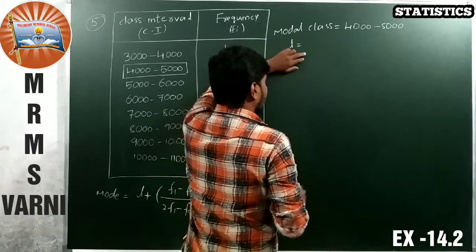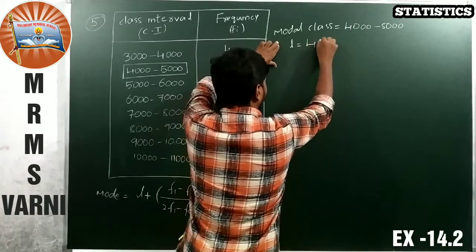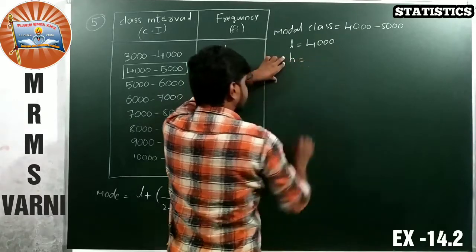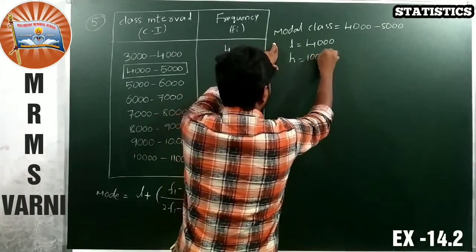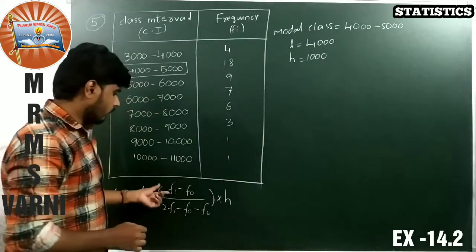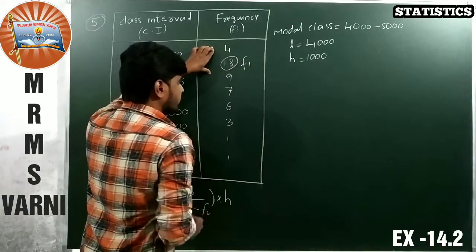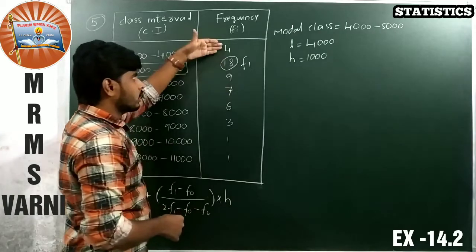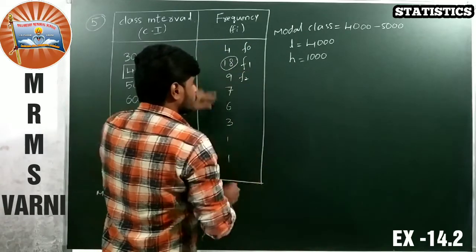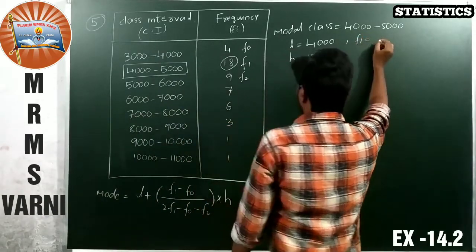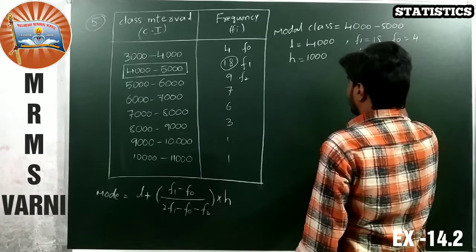Modal class is 4000 to 5000. Now what is the L value? Lower limit of the modal class. What is the lower limit of the modal class? 4000. Now what is the h value? Class size of the modal class, that is 4000 to 5000, it is 1000. Now what we have to find? F1, F0, F2. The highest frequency is the required F1. The preceding term is 4 is the F0. The successive frequency is 9 is F2. So I am writing here.